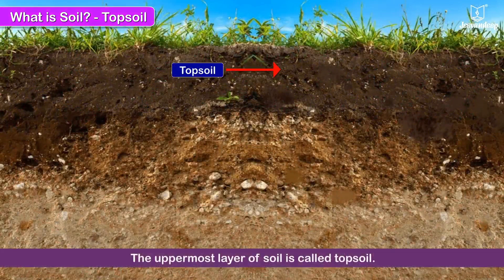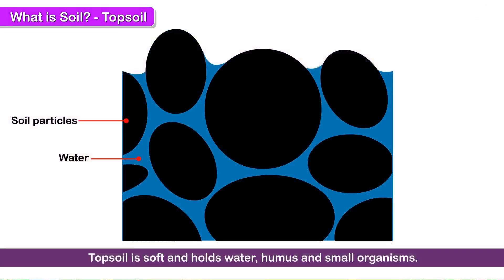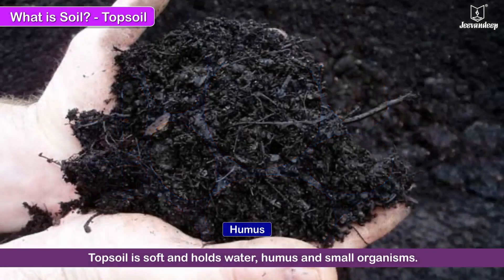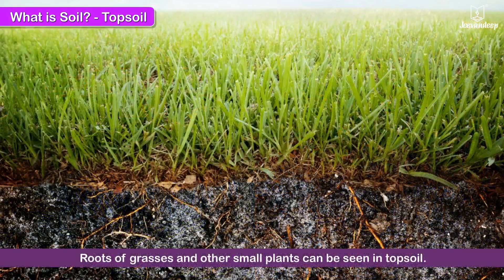The uppermost layer of soil is called topsoil. It is soft and holds water, humus and small organisms. The roots of grasses and other small plants can be seen in topsoil.